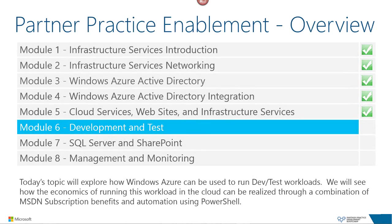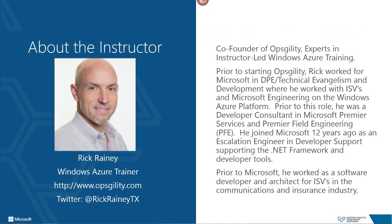Welcome to Module 6 of the Partner Practice Enablement Bootcamp for Windows Azure. Today's topic will explore how Windows Azure can be used to run dev and test workloads, and how the economics of running this workload in the cloud can be realized through a combination of various subscription benefits and automation using PowerShell. Our instructor today will be Rick Rainey, co-founder of Opsgility, an organization focused on Windows Azure training and a Microsoft veteran.